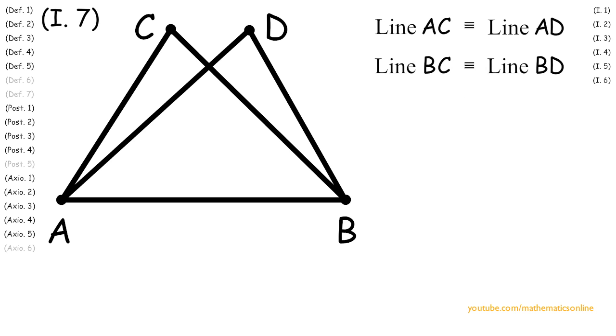So now Euclid says that at every point D above line AB that we pick, we can always reach a contradiction. So to begin we use postulate 1 to create line CD.